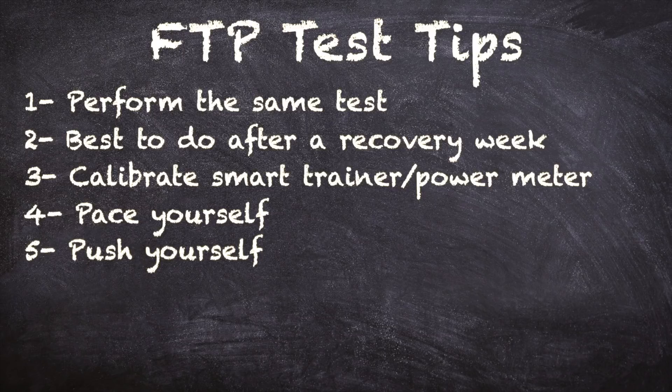There's another way in Zwift to set your FTP if you don't know your FTP value. Just put a low number like 100 watts and go ride very hard, or do a race that will last at least 30 minutes or so. Zwift usually analyzes your critical power from each ride and if it detects a new FTP value you'll get a notification and you can update it.